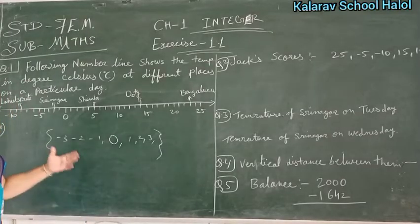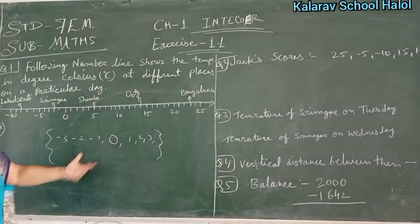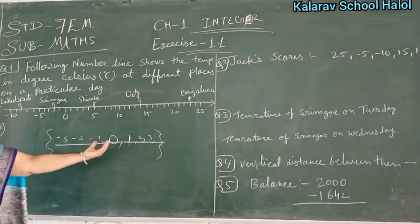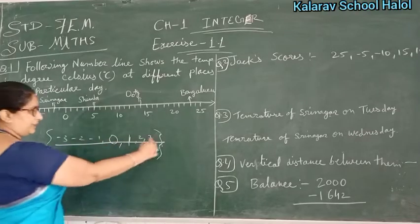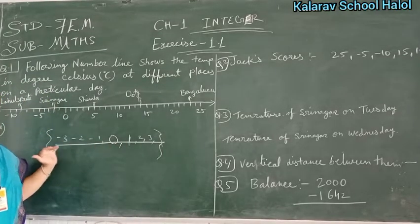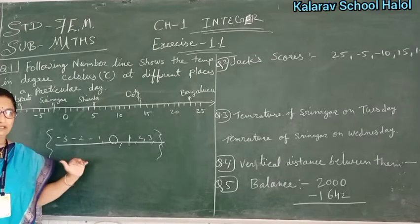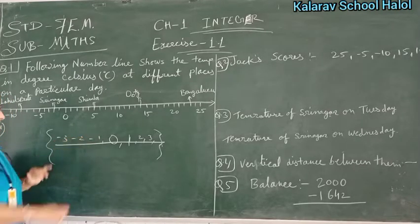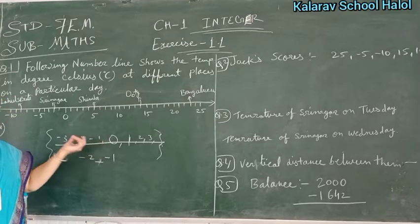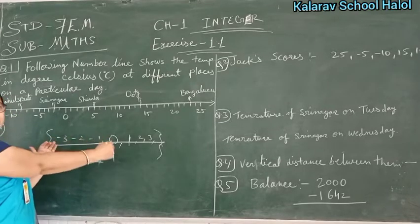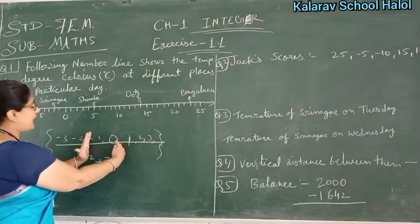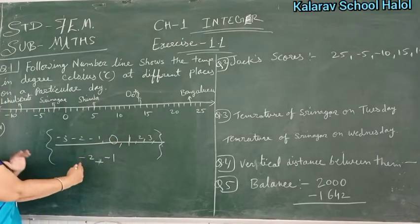Understand what Integer means? Like we have left to right on a number line — this is the right hand side and this is the left hand side. So as you go right hand side, numbers are smaller on the left — minus 1, minus 2 — and as you go right hand side, numbers increase. As you go left hand side, numbers decrease.